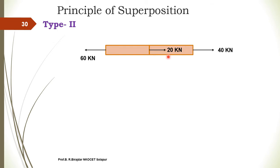We find out the deformation of each separate component, and at the end we add the deformation of each individual body. This is what you call the principle of superposition.